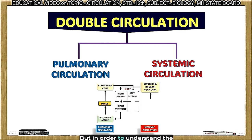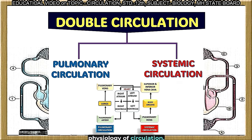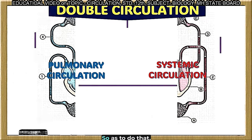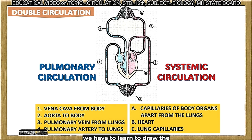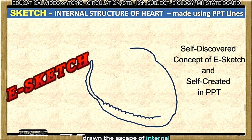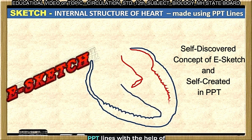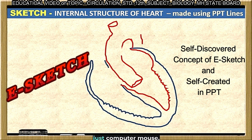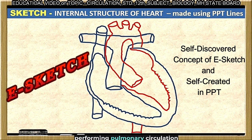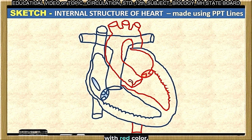But in order to understand the physiology of circulation, we must learn the morphology and anatomy of the heart. To do that, we need to draw the internal structure of the heart. Here you can see I have drawn an e-sketch of the internal structure of the heart using just PPT lines with a computer mouse. I have highlighted the part performing pulmonary circulation in blue and the part for systemic circulation in red.